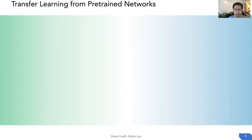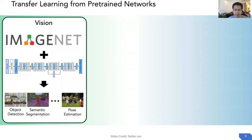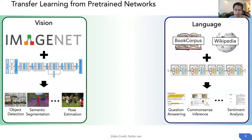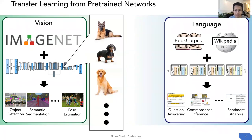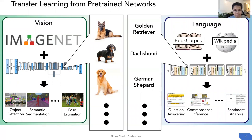Transfer learning from pre-trained networks is a very popular scheme in both the vision and language communities. In vision, we first pre-train a convolutional network on ImageNet, then transfer the models to object detection, semantic segmentation, and pose estimation. In language, we train transformer-based models on datasets such as BookCorpus and Wikipedia, then transfer to question answering, entailment inference, and sentiment analysis. For both domains, we can learn representations covering a lot of different concepts, such as different breeds of dogs.